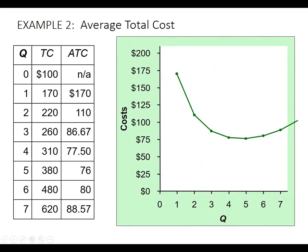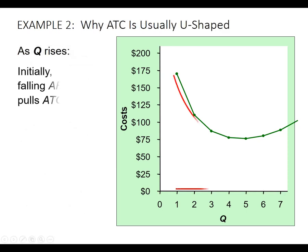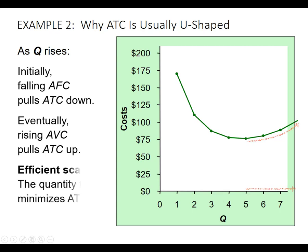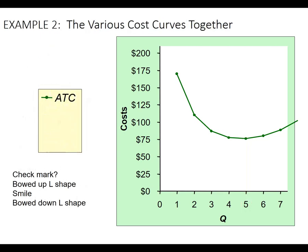Here's our average total cost curve. It's going to be above average variable cost, and average variable cost will never cross it. Initially, average total cost is going to fall as average fixed cost falls. Then eventually, average variable cost is going to start to drag it up because marginal costs are now going to increase. There's a term called efficient scale — sometimes called productive efficiency — which is the quantity at the minimum of average total cost. In this case it's five. Where is it cheapest to produce? It doesn't mean you always want to produce there — you always want to profit maximize where marginal revenue equals marginal cost — but it is an important way of thinking about your costs.